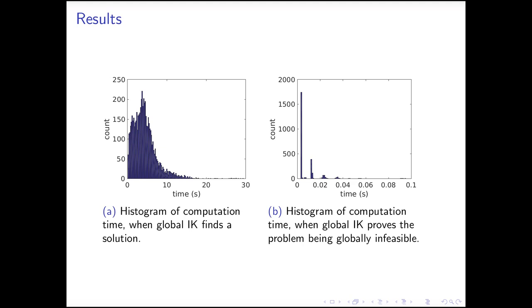We show the computation time on the robot arm. On the left hand side, we show the histogram when our approach finds a solution. The average computation time is about 4 seconds, so it is not fast, since we are solving the problem globally. The good news is shown on the right hand side, that in most cases, our solver spends less than 10 milliseconds to detect a problem being globally infeasible. So it is generally really fast to detect the infeasibility.